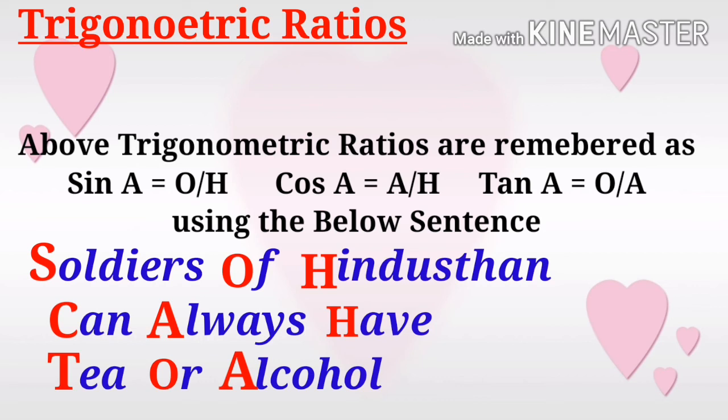It can be remembered as: Soldiers of Hindustan can always have tea or alcohol, because they are protecting our country at cool temperatures. SOH means sin equals O by H, CAH means cos A equals A by H, and TOA means tan equals O by A.